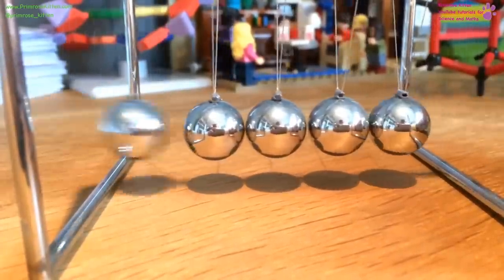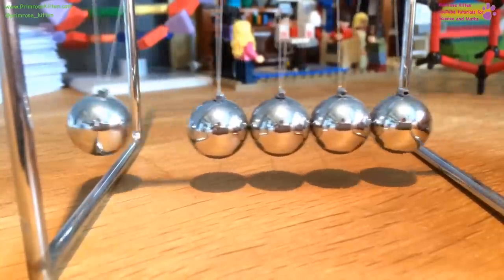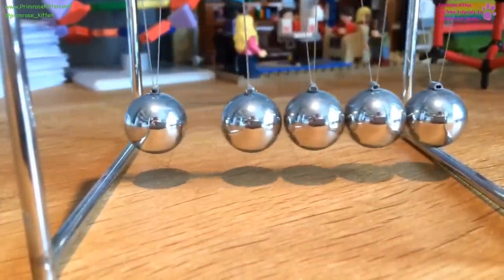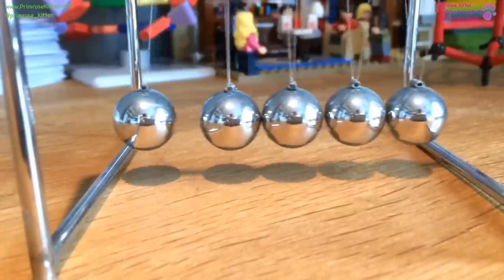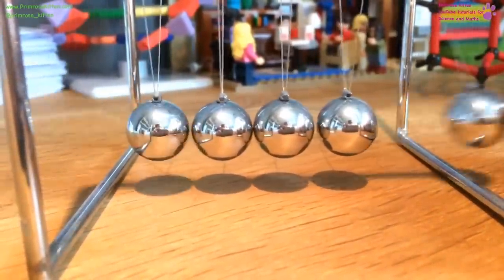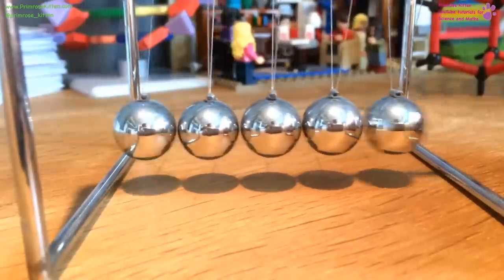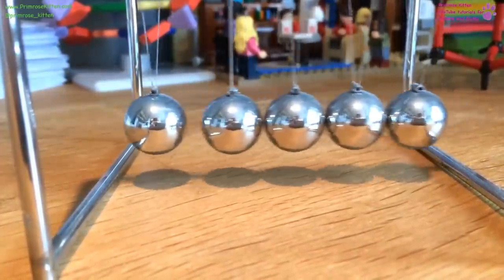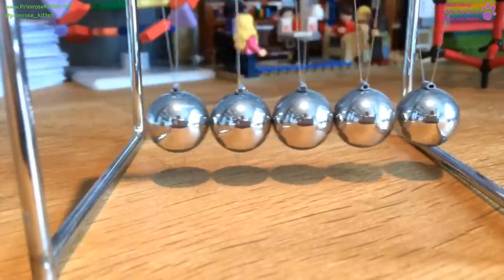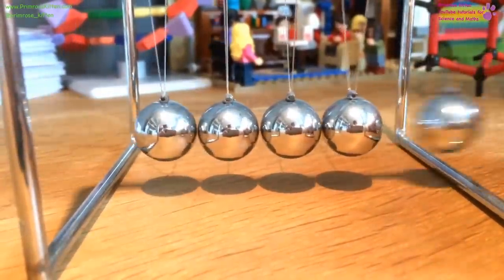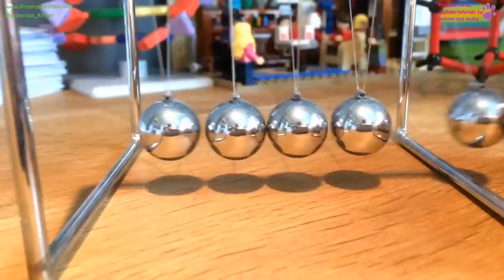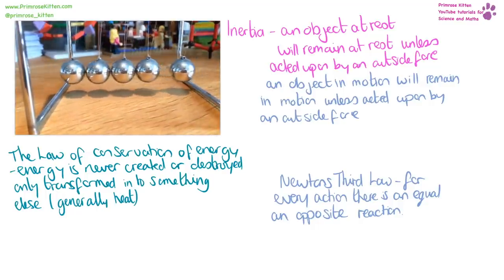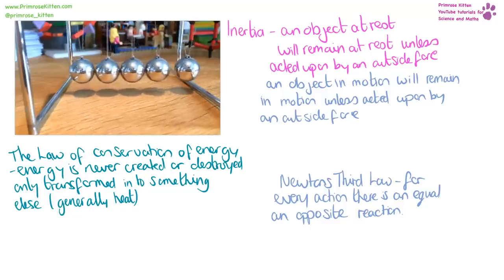A Newton's Cradle elegantly demonstrates several physics principles. First, inertia: an object in motion will remain in motion, and an object at rest will remain at rest, unless acted on by an outside force. It also demonstrates conservation of energy — the balls slow down as they lose energy to sound and friction with the air.